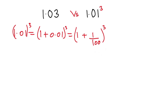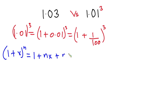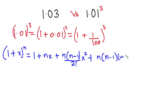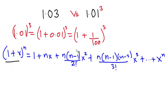From the binomial theorem, (1 + x)^n equals 1 plus n·x plus n(n−1) over 2! times x squared, plus further terms up to x to the power n. Comparing this with our expression, we identify x = 1/100 and n = 3.